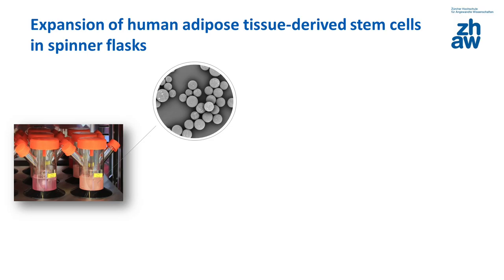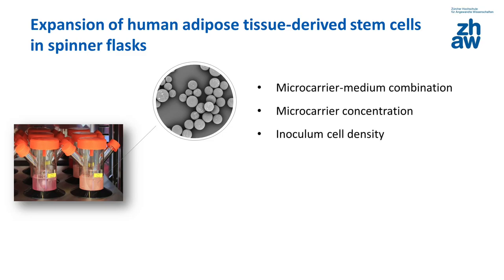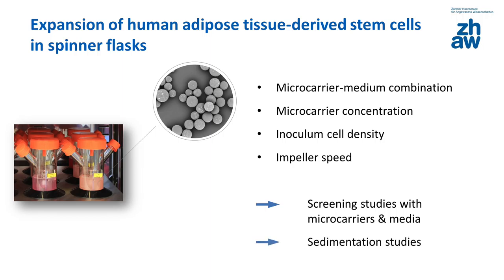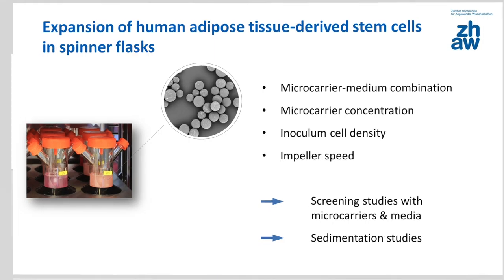Spinner flasks operating with microcarriers allow successful expansions of MSCs at milliliter scale. However, as mentioned in video number one, it is necessary to determine beforehand the optimum microcarrier-medium combination, microcarrier concentration, inoculum cell density, and impeller speed for the spinner flask type and working volume. This presupposes both screening studies with different microcarriers and media and the sedimentation studies described in video number two.